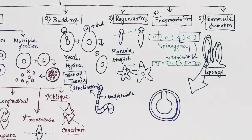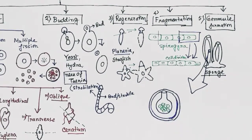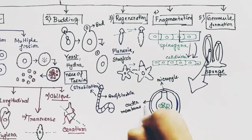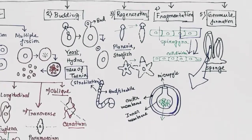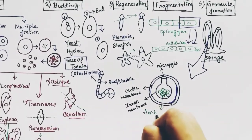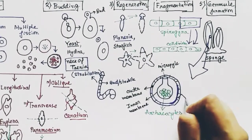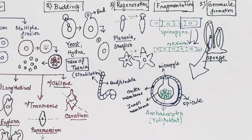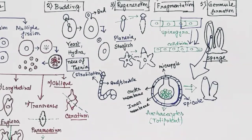The gemmule structure has cells inside it, and the micropyle is the mouth of this structure. It has an outer membrane and an inner membrane. The cells inside are called archaeocytes. There are spicules in the outer membrane which form the outer structure of the sponge. The archaeocytes are totipotent cells, meaning they can form other types of cells of the sponge, so a gemmule can give rise to a new sponge.